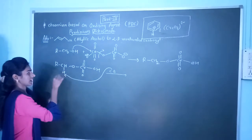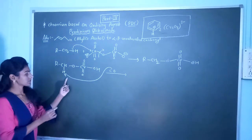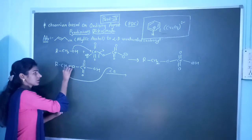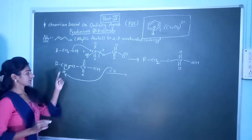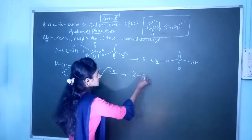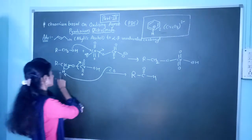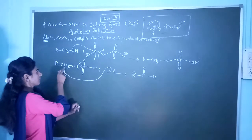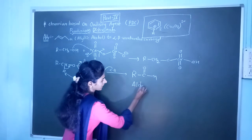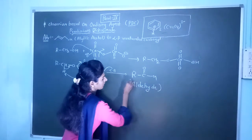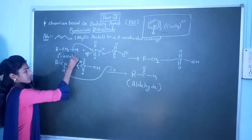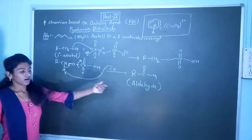The conjugate base will abstract the hydrogen atom, and this bond is shifted over to give RC double bond O, and the hydrogen is liberated. Here our product is obtained — that is an aldehyde. So from primary alcohol, we obtain aldehyde as a product.